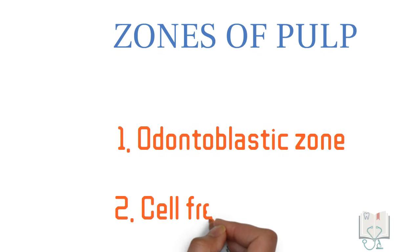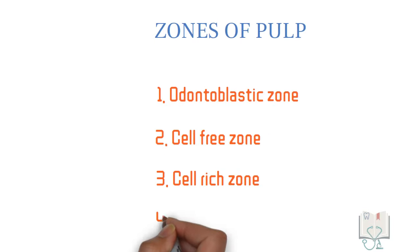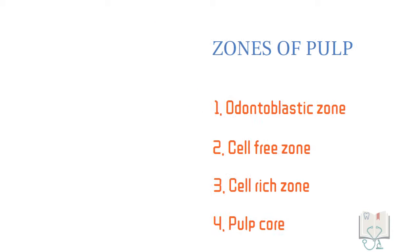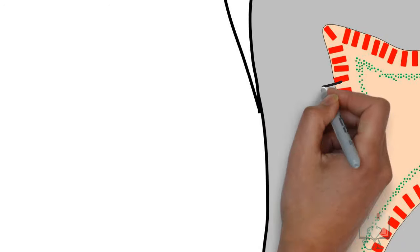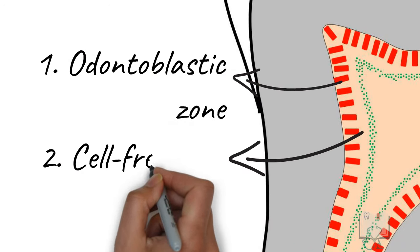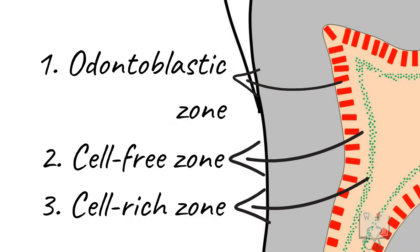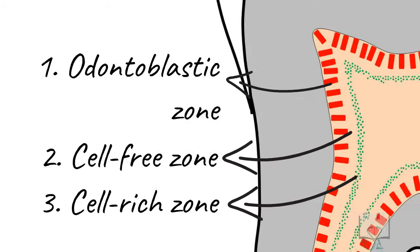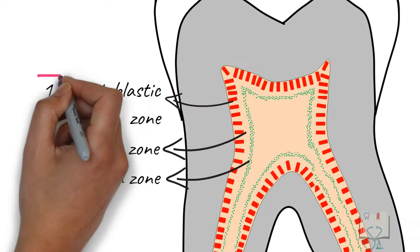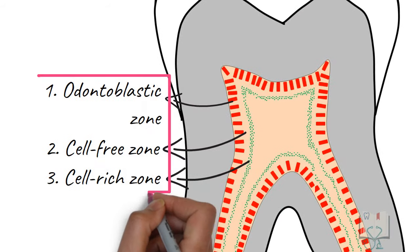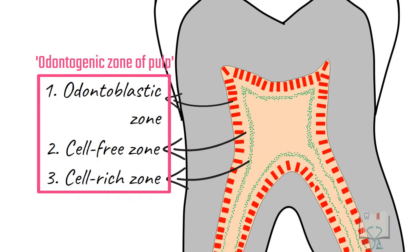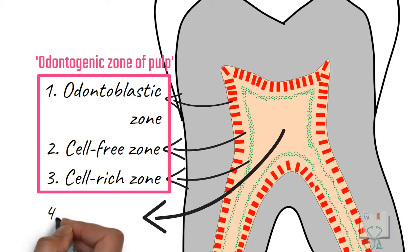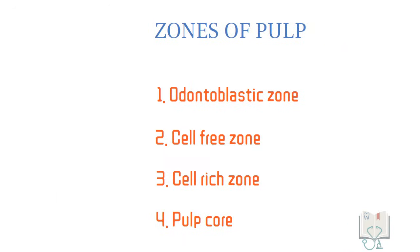Histologically, the dental pulp can be divided into four distinct zones: the odontoblastic zone, cell-free zone, cell-rich zone, and pulp core. The first three zones — odontoblastic, cell-free, and cell-rich — are present at the periphery of the pulp and collectively form the odontogenic zone of the pulp, whereas the major central portion of the pulp is formed by the pulp core.